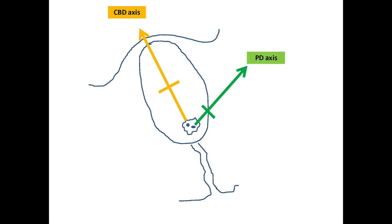You can see that the common bile duct axis is towards the 11 o'clock position and it's important that the catheter is orientated along the axis of the common bile duct.